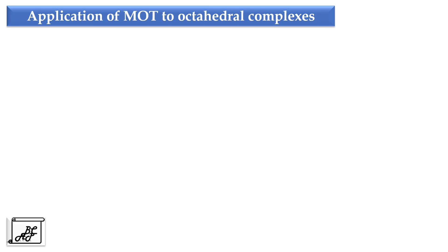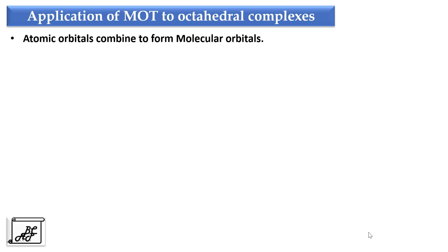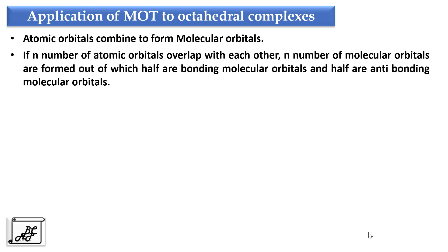When we study the application of molecular orbital theory to octahedral complexes, let's first understand the postulates of molecular orbital theory. The first postulate is that atomic orbitals combine to form molecular orbitals. The second is if n number of atomic orbitals overlap with each other, n number of molecular orbitals will be formed, out of which half are bonding and half are anti-bonding.